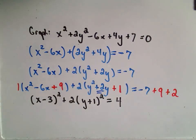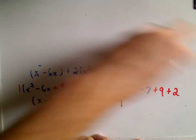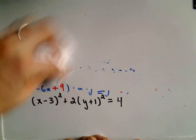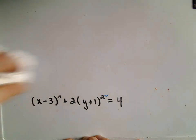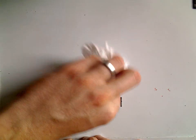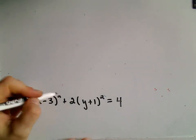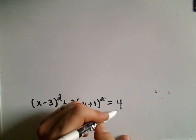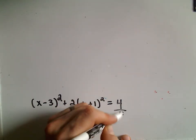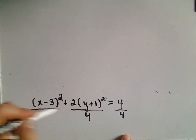The point of completing the square is we can now write each group as a perfect square. So x squared minus 6x plus 9 factors as (x minus 3) squared. We've got our 2 out front, and y squared plus 2y plus 1 factors as (y plus 1) squared. On the right side, negative 7 plus 9 is 2, and 2 plus 2 gives us 4. We've almost got our standard form. The last step is to divide everything through by 4 so the right side equals 1.